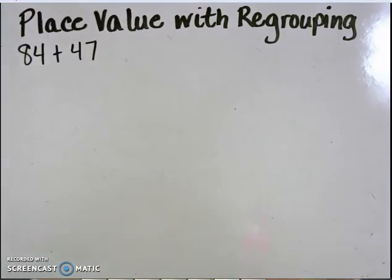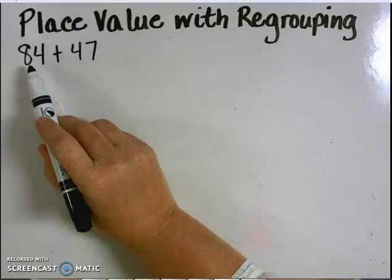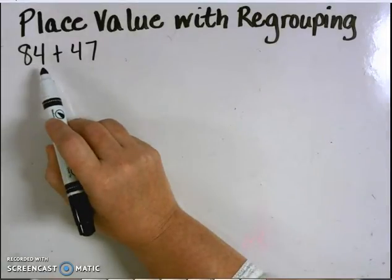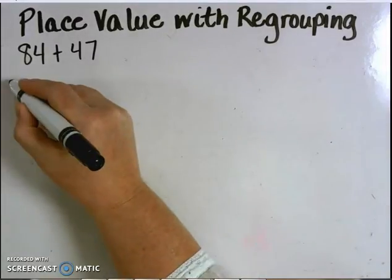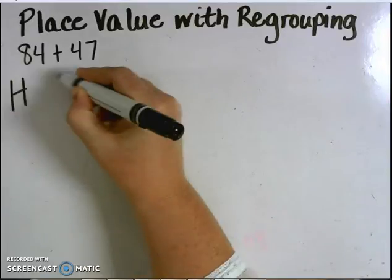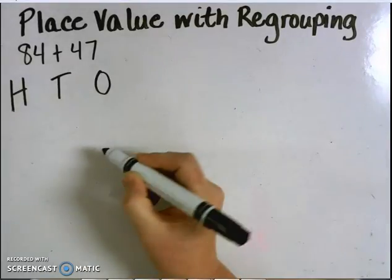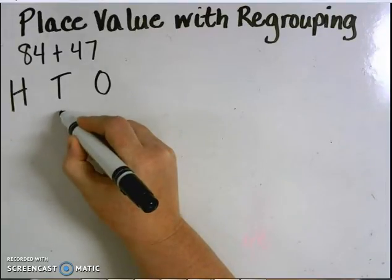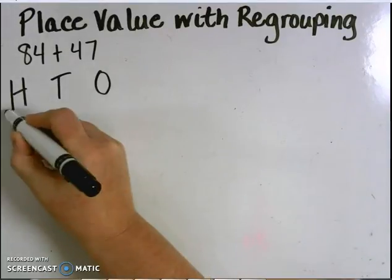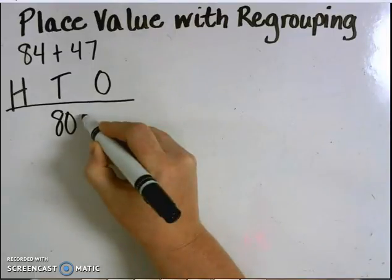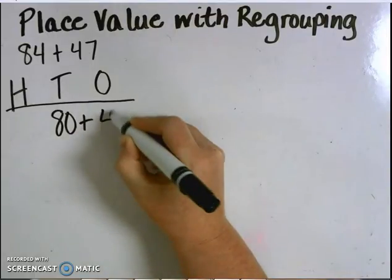I'll start by breaking apart by place value each of the numbers. The number 84 has eight tens and four ones. I'll use the hundreds, tens, and ones chart to help me do this. Eight tens is 80, and four ones are left over.